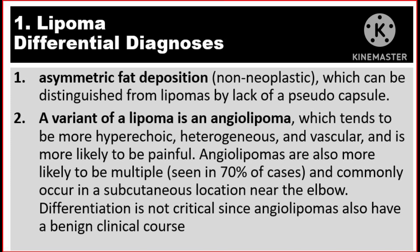Differential diagnosis. Asymmetric fat deposition, non-neoplastic, can be distinguished from lipomas by lack of a pseudocapsule. A variant of a lipoma is an angiolipoma, which tends to be more hypo-echoic, heterogeneous, and vascular, and is more likely to be painful. Angiolipomas are also more likely to be multiple, seen in 70% of cases, and commonly occur in a subcutaneous location near the elbow. Differentiation is not critical since angiolipomas also have a benign clinical course.